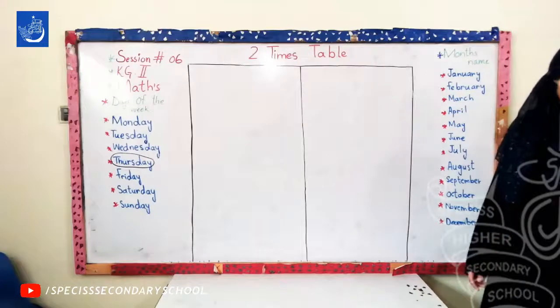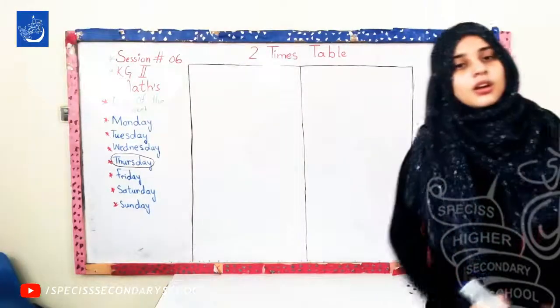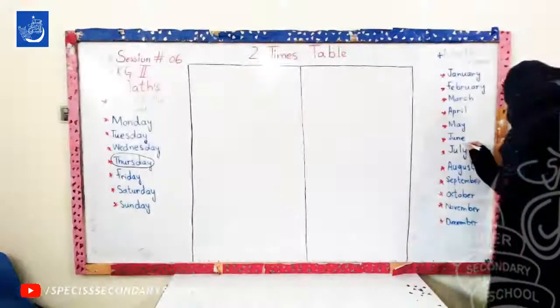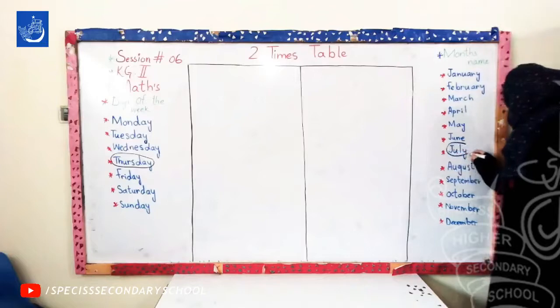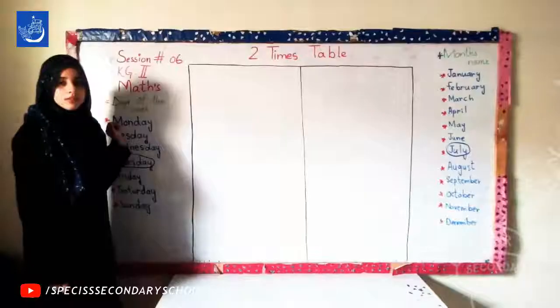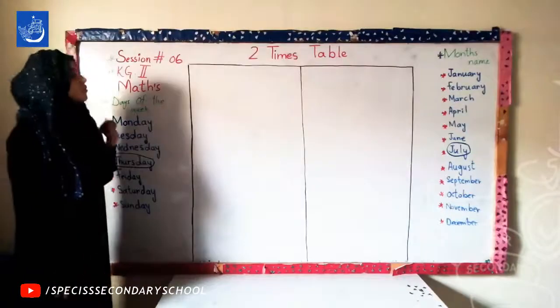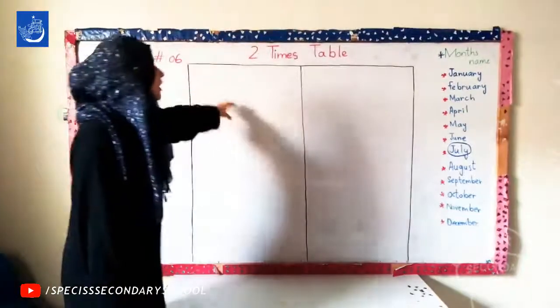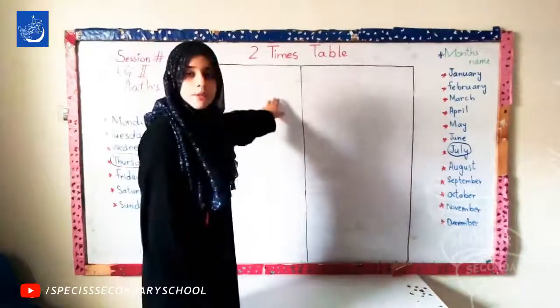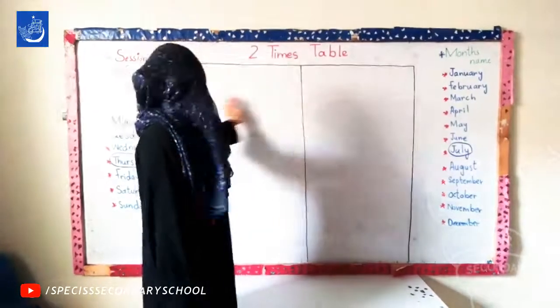Students, which month is going on? Which month is going on? July. J-U-L-Y July. So, today is our 6th month session in which we are going to learn 2 times table. 2 times table. So, let's start students.